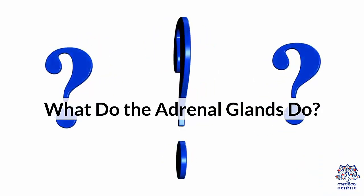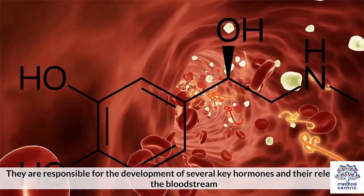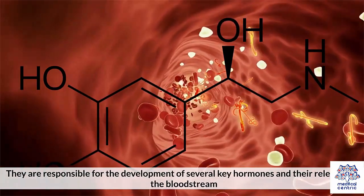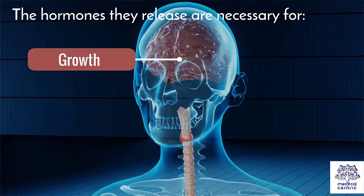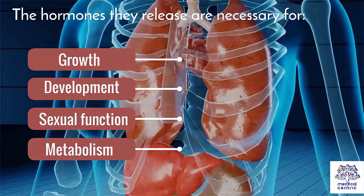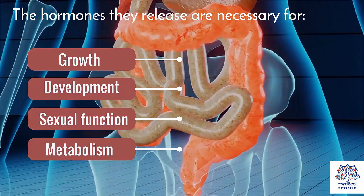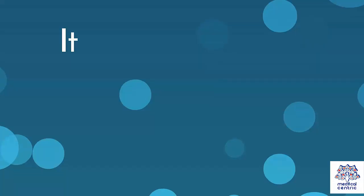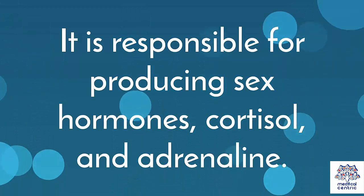What do the adrenal glands do? The adrenal glands, located on top of each kidney, are part of the endocrine system. They are responsible for the development of several key hormones and their release into the bloodstream. The hormones they release are necessary for growth, development, sexual function, and metabolism. The adrenal glands are responsible for producing sex hormones, cortisol, and adrenaline.